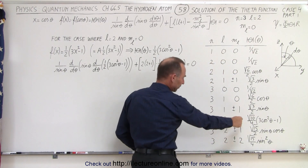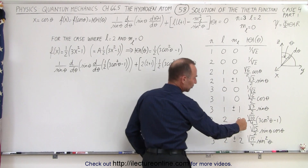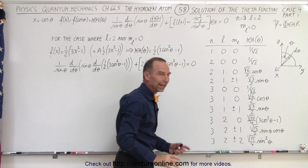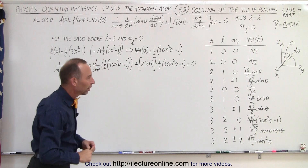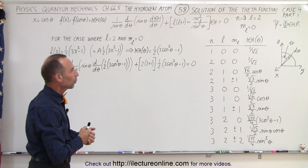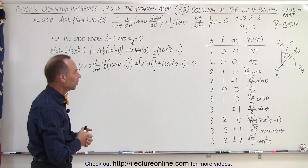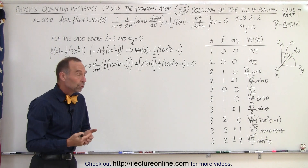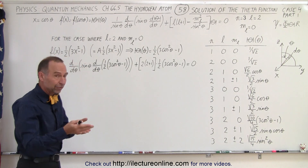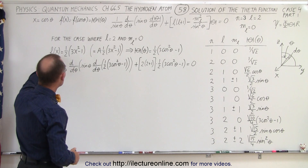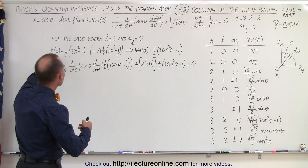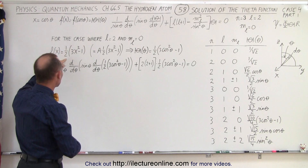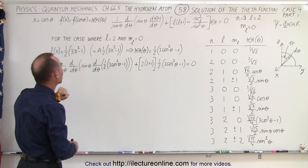Going down the table, we find it right over here. Notice that we expect this to be the solution to that particular arrangement of the angular momentum quantum number and the magnetic angular momentum quantum number. Looking back at a few videos ago, the solution when we replace the cosine of theta by x has the solution written as 1 half times 3x squared minus 1.